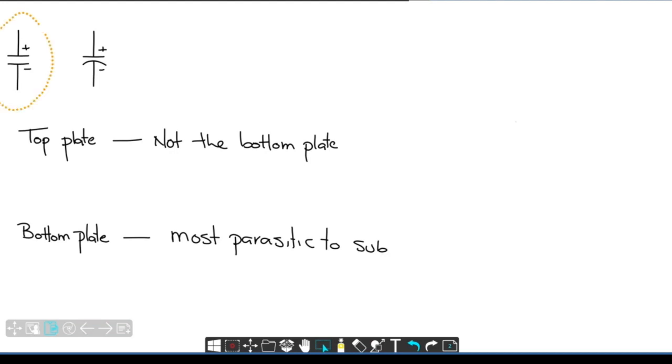So if I come along here and we basically take this capacitor down and just have a very quick peek at it. Effectively, what we're saying here is that this is going to have a capacitance to substrate, and this is going to have a capacitance to substrate. We're going to call this C top. We're going to call this C bottom, such that C top is less than C bottom.